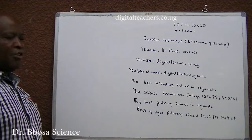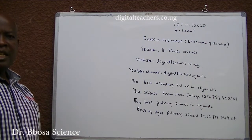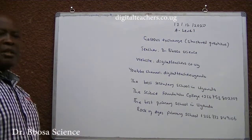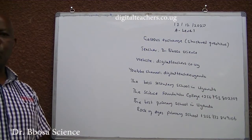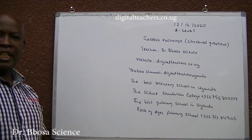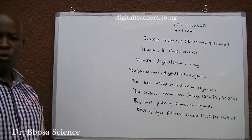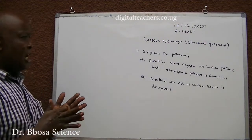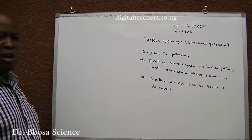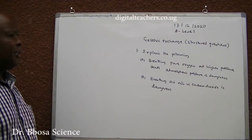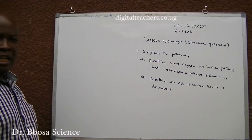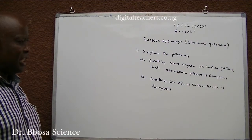The best secondary school in Uganda is the Science Foundation College. Number 1A: Breathing pure oxygen at higher pressure than atmospheric pressure is dangerous.